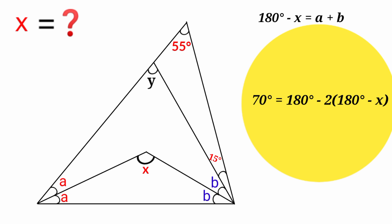Now 70 degrees equals 180 degrees minus 2 times (180 degrees minus x). If we expand this bracket now, we're going to have minus 2 times 180 degrees minus 2 times minus x. Minus 2 times 180 degrees is minus 360, and minus 2 times minus x is plus 2x.